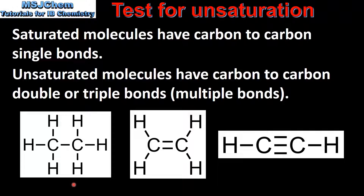So to recap, we have an alkane, an alkene, and an alkyne. Alkanes have carbon to carbon single bonds and are saturated molecules. Alkenes and alkynes have carbon to carbon double and carbon to carbon triple bonds respectively, and are therefore unsaturated molecules.